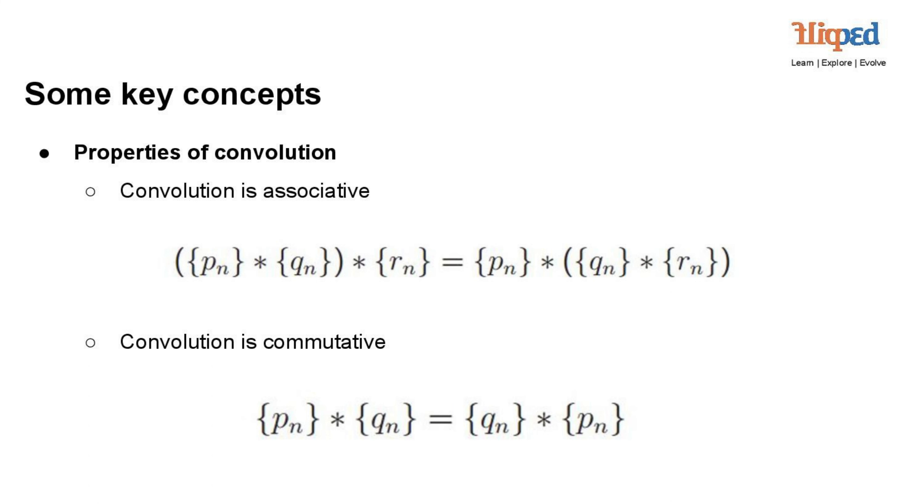Convolution is commutative, indicating that the order in which two sequences are convolved does not change the result. Mathematically, for two sequences p(n) and q(n), the commutative property is expressed as: